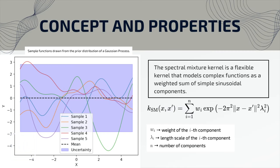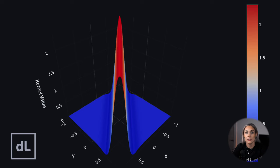The spectral mixture kernel is a flexible kernel that models complex functions as a weighted sum of sinusoidal components — functions that oscillate in a regular wave-like pattern. Mathematically, the weights of each component i and lambda denote the length scale of that component, where n is the number of components. By combining multiple sinusoidal components with different frequencies and weights, this kernel can capture a wide range of patterns and structures in the data.